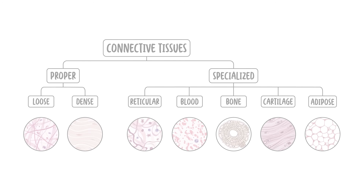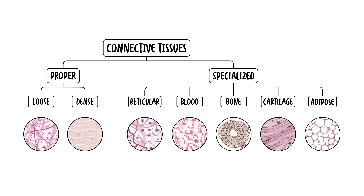So in summary, each type of connective tissue, with its unique composition and arrangement of cells, fibers, and ground substance, plays a crucial role in the body's structure and function, highlighting the interconnectedness and complexity of bodily systems. We divided connective tissue into two broad types: connective tissue proper and specialized connective tissue, which includes bone, cartilage, blood, and even adipose tissue. Thank you for watching.